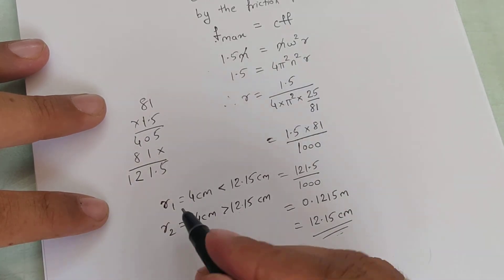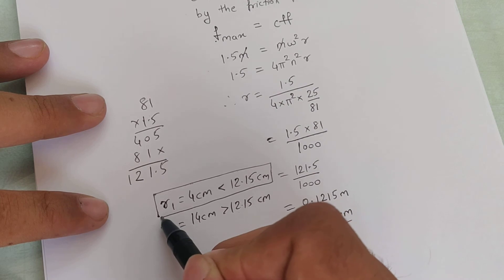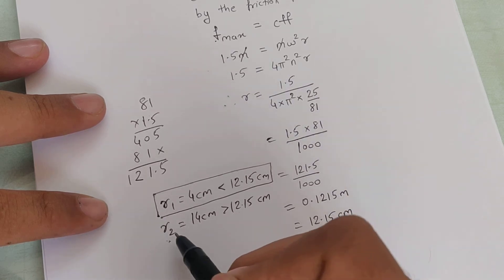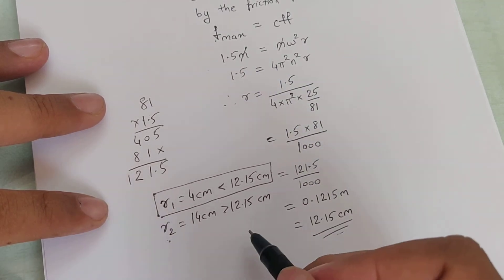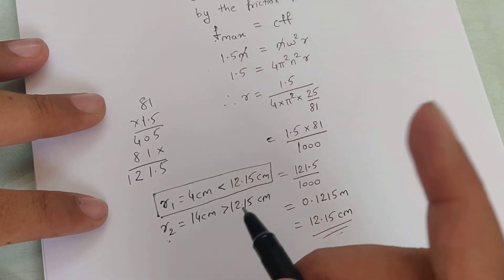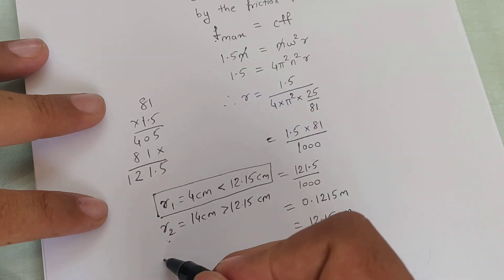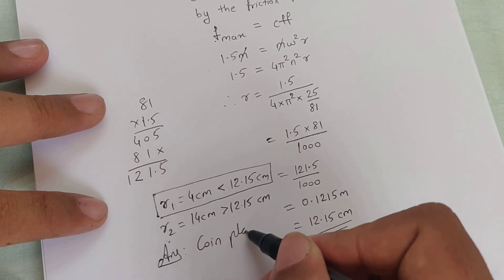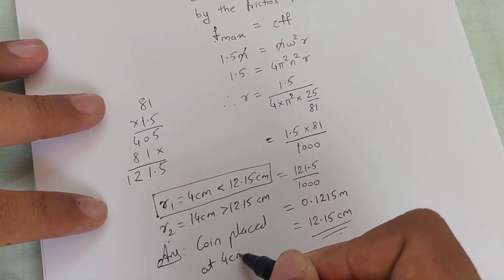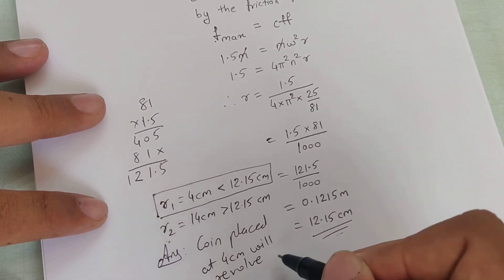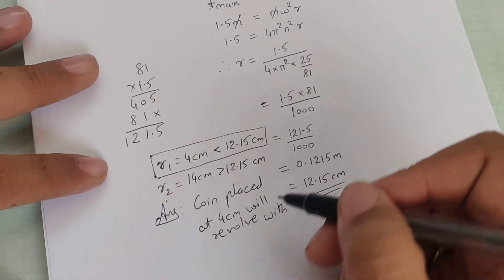Which means coin 1 will revolve with the record but coin 2 will fly off or will skid off from the record because the centrifugal force will overcome the friction force. So I can say the answer is coin placed at 4 centimeter will revolve with the record.